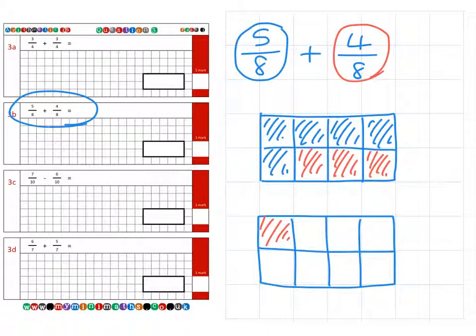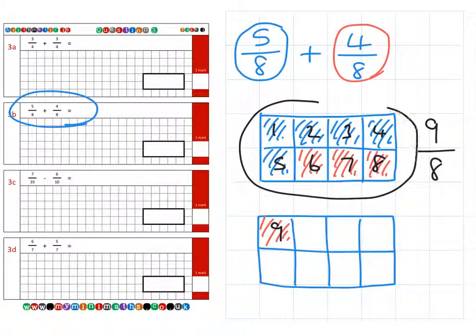So altogether, we have 1, 2, 3, 4, 5, 6, 7, 8, 9. We have 9 eighths altogether, or we could say 1 whole and 1 eighth left over.